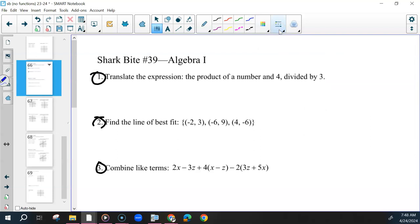Remember that translating is not something you can do in Desmos. You have to know how to translate to the product of everything. After that, we're multiplying those two things together. A number and four divided by three. So pick some variable, multiply it by four, and divide it all by three.